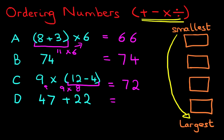And lastly, we've got D. D is an addition problem. So what we do here is we simply add the units together first. So we add the 7 and the 2. 7 plus 2 is 9. And then we add the 10s, which is 4 plus 2. 4 plus 2 is 6.